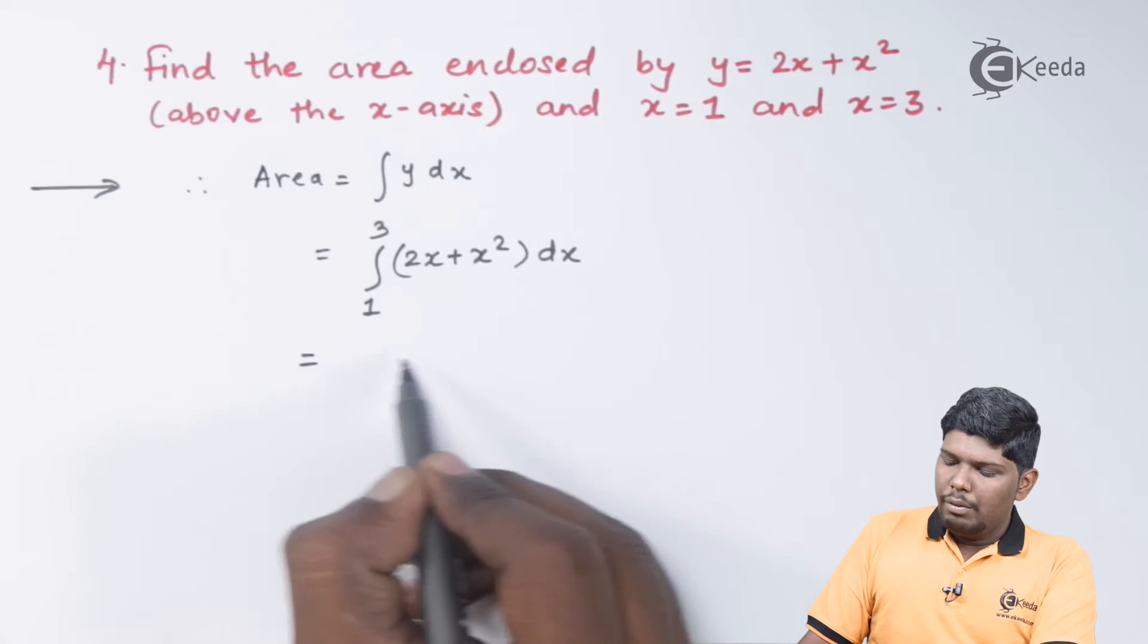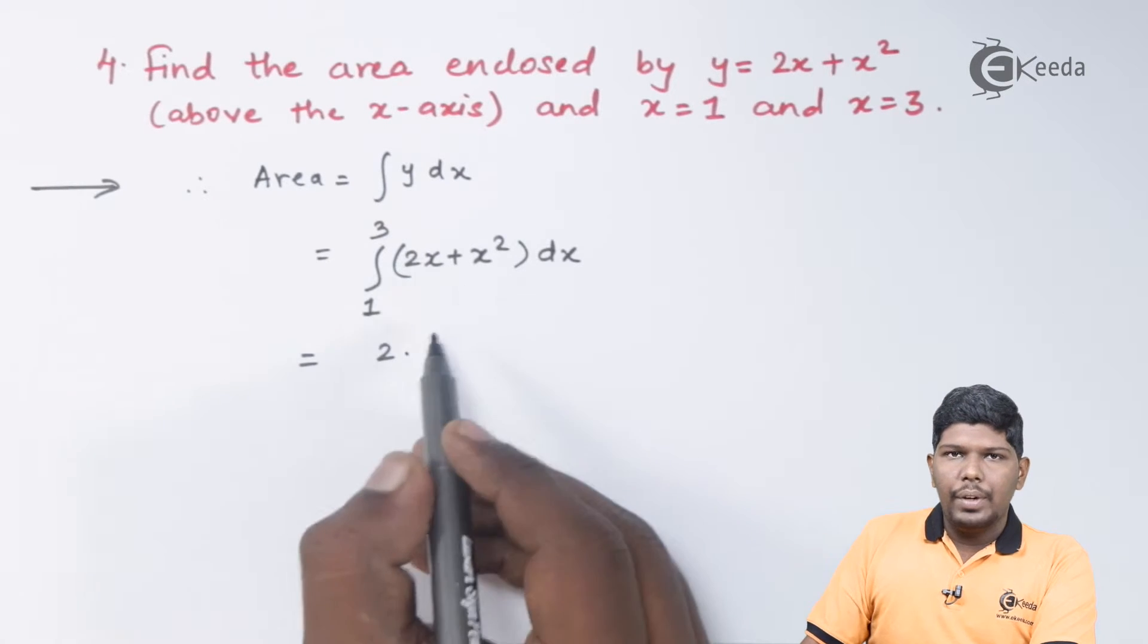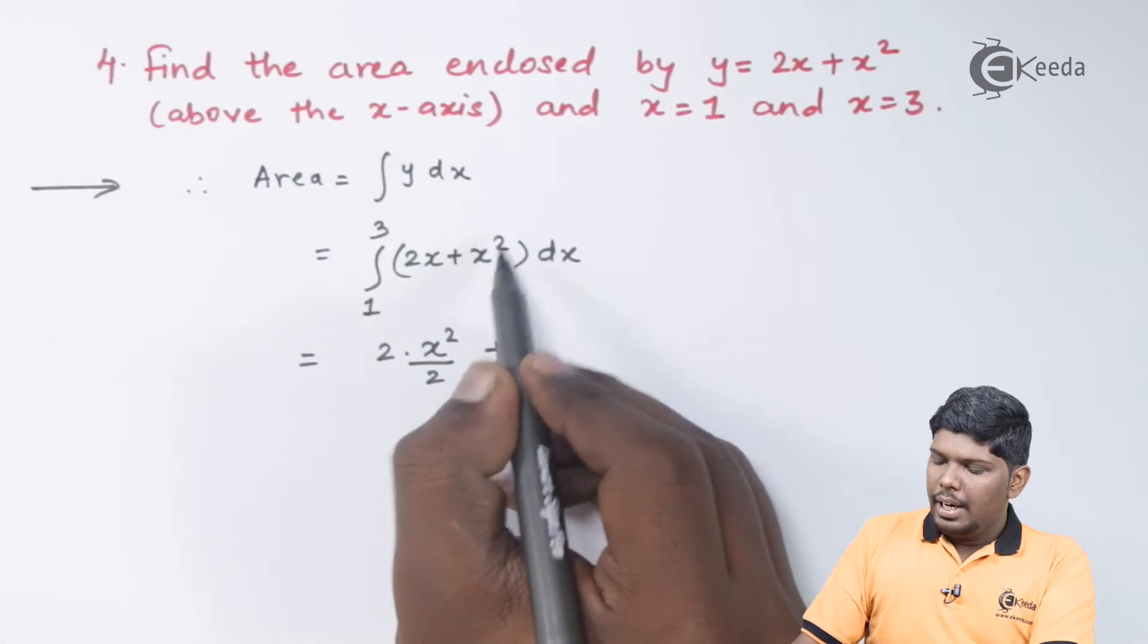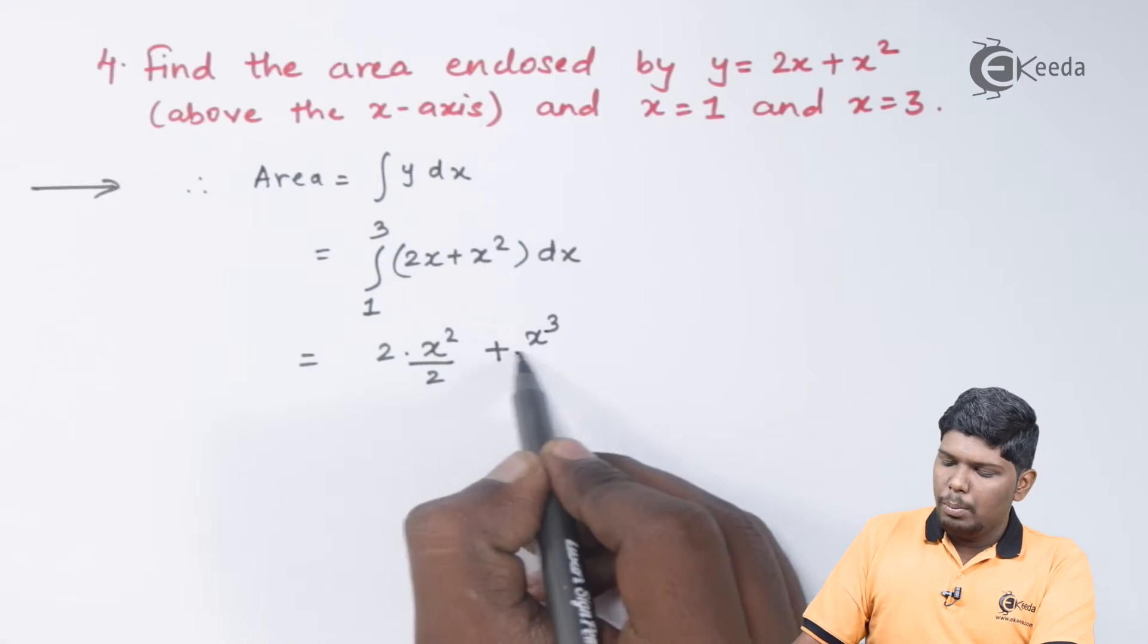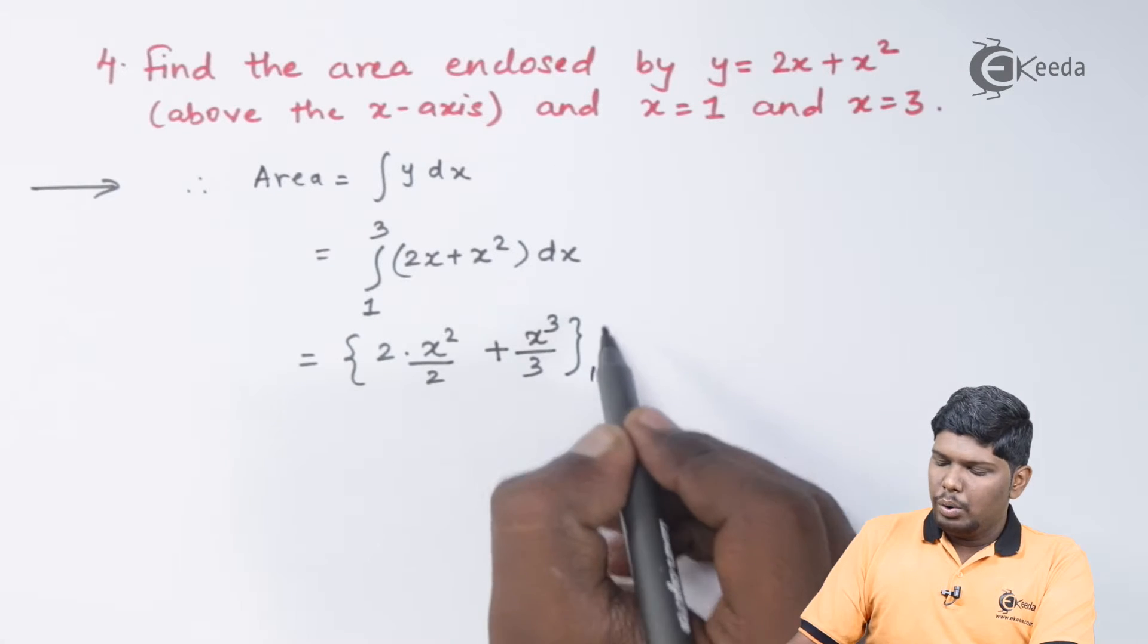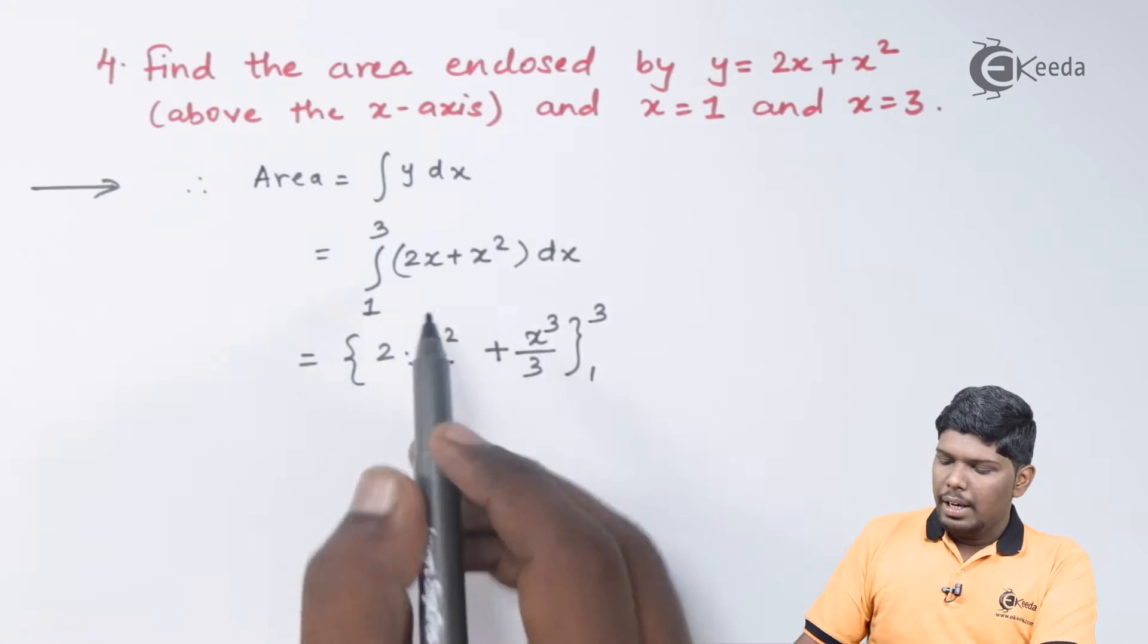On further solving, this will give you 2. Integration of x is x square by 2, plus integration of x square is x cube by 3, within limits 1 to 3. Here 2 will be cancelled.